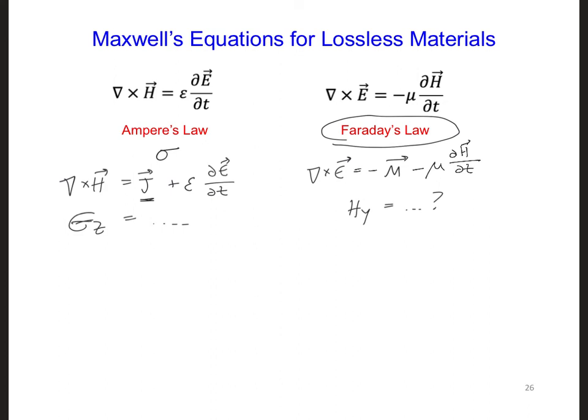By the way, an example m source is a spinning magnet. And just like we said earlier, j is equal to sigma E, now we can write m is equal to sigma star H. So now take a minute and see if you can develop the update equation for the Hy component in the absorbing material region of our model, where there is a nonzero sigma star value.